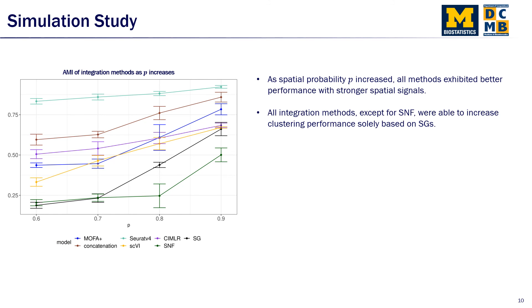So the larger the p-value is, the more expressed and obvious the spatial expression pattern would be for that gene. And looking at the results here, we can see that as the spatial probability p increased, all the methods were able to exhibit better performance with stronger spatial signals. And all the integration methods, except for SNF, were able to increase clustering performance that were solely based on spatially variable genes, which speaks to our hypothesis that the combination of spatially variable genes and highly variable genes can indeed improve the clustering performance.